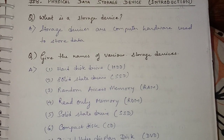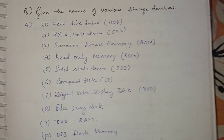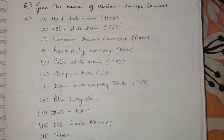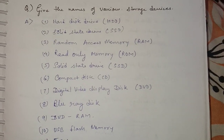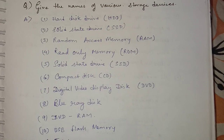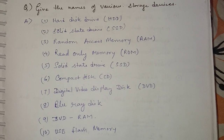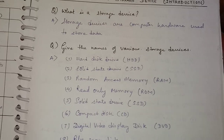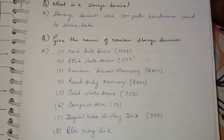We have talked about various types of hardware. Hardware is basically something that is tangible — you can touch it with your fingers. So when we are talking about storage devices, they are computer hardware that are used to store data.